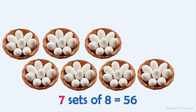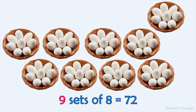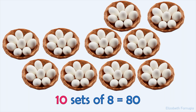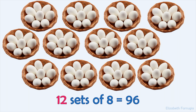Seven sets of eight make fifty-six. Eight sets of eight make sixty-four. Nine sets of eight make seventy-two. Ten sets of eight make eighty. Eleven sets of eight make eighty-eight. Twelve sets of eight make ninety-six.